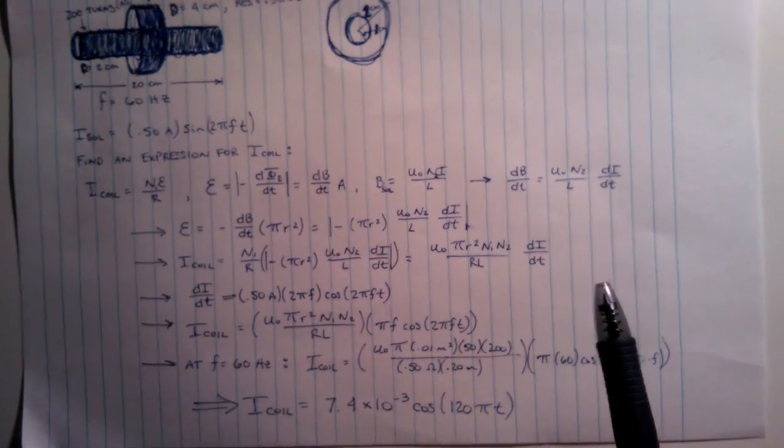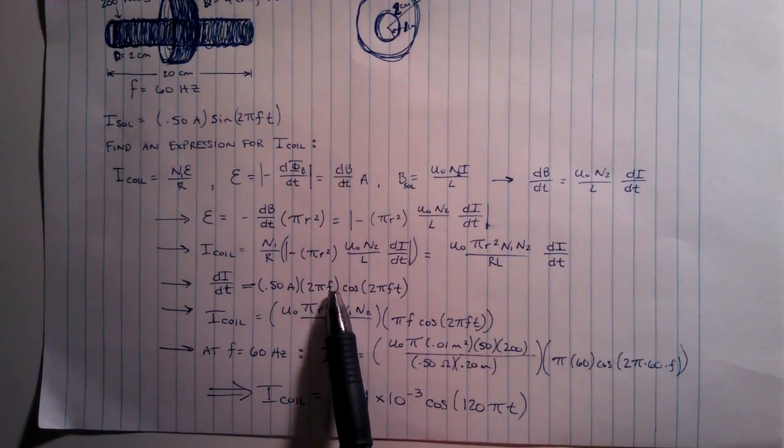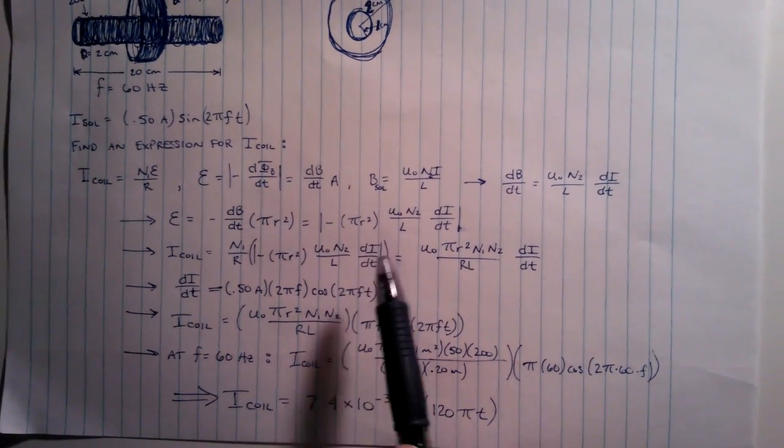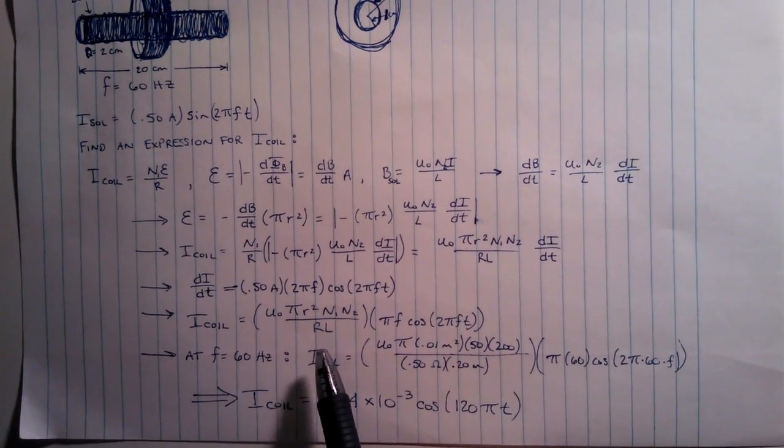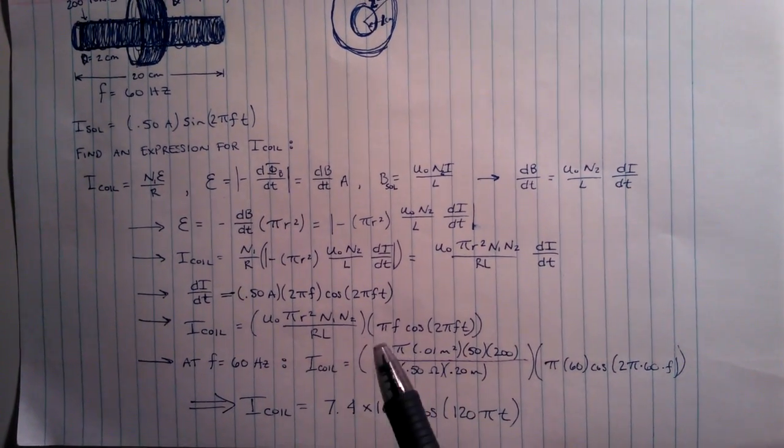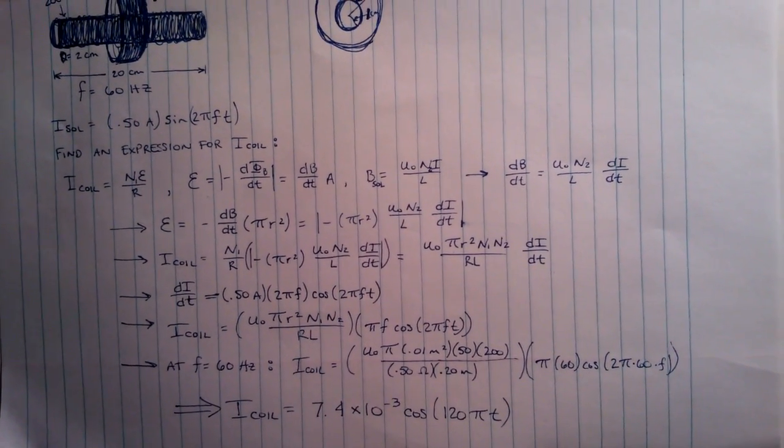Next you're going to plug this into your dI/dt here and you'll come out with this expression here which is μ₀πR²N₁ times N₂ over resistance times the length of the solenoid times your dI/dt here.